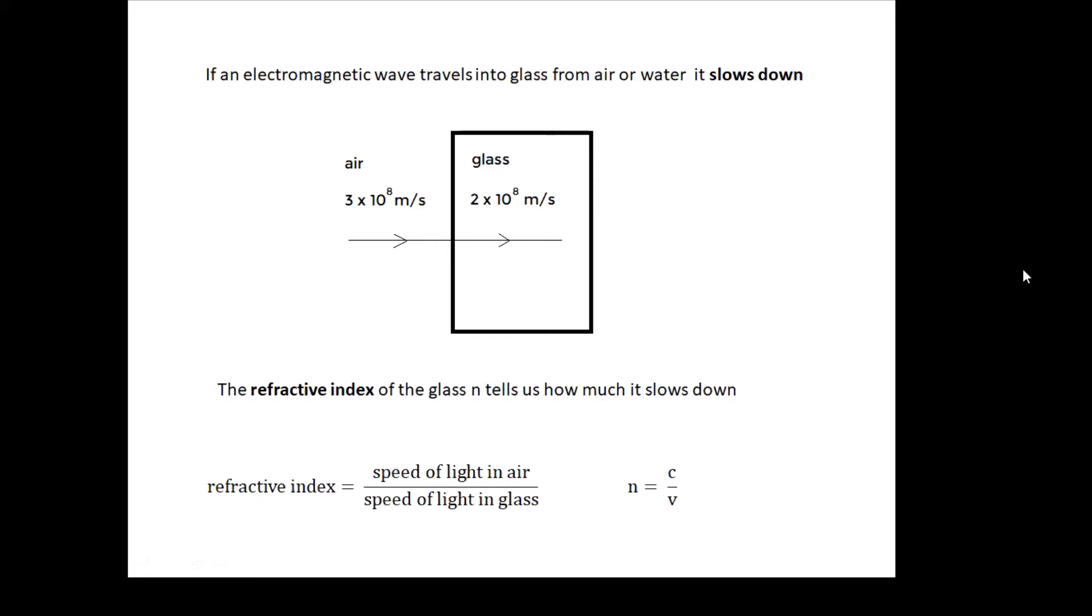If an electromagnetic wave travels into glass from air or if it goes into water, it slows down. The refractive index is little n and it tells us how much it slows down.